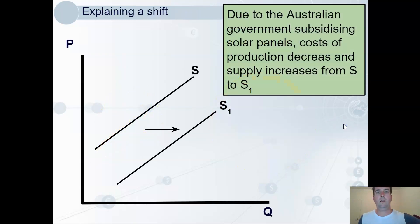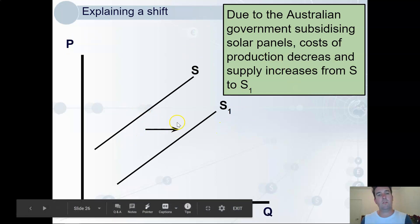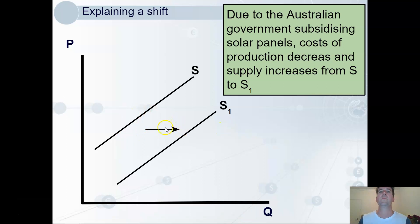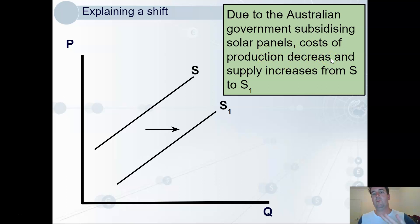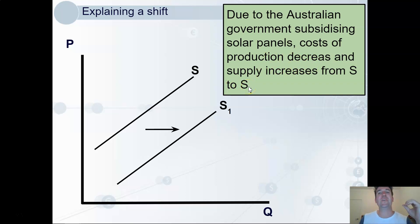Again, looking at communication skills: in this course you need to illustrate and explain shifts in supply. I've labelled my axes and curves clearly, used an arrow to show the direction, and stated the reason — due to the Australian government subsidising solar panels, costs of production decrease and supply increases from S to S1. That's clear communication. We're going to go through a lot of exercises in class to really get these ideas down, so I will see you there.